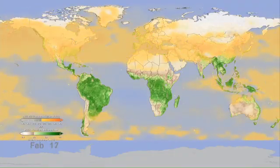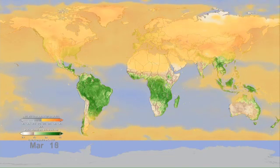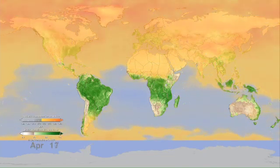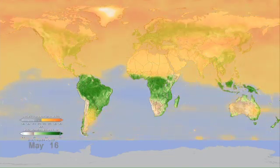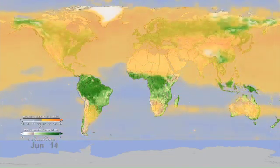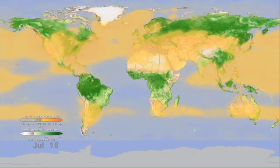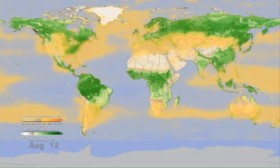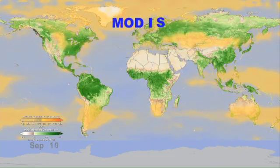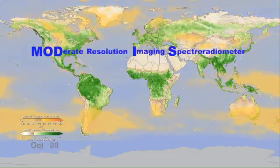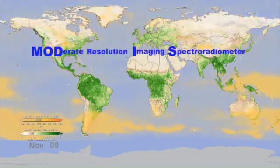In this animation, orange represents carbon dioxide as measured by AIRS. Green represents the concentration of vegetation measured by another instrument on the AQUA satellite called MODIS.